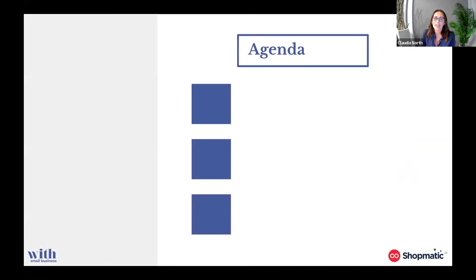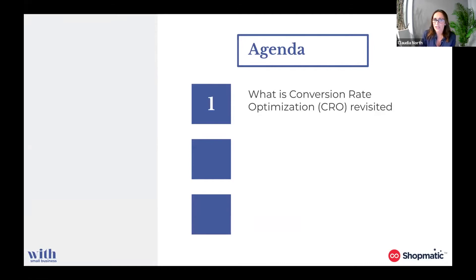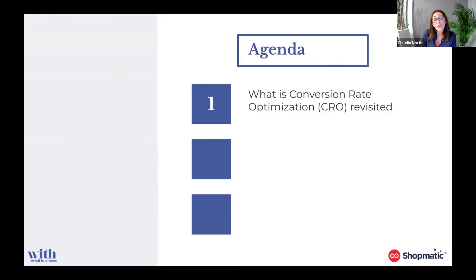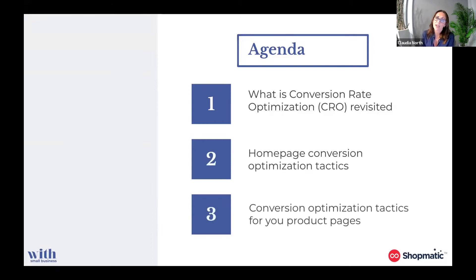Just to touch on what we're going to be covering today: first, what is conversion rate optimization — we'll revisit a summary. Next, we'll tackle some conversion rate tactics for your home page, which is such an important place where all visitors come, and we want to use it as a functional tool to convert people — thinking about the philosophy, the behaviours, and how we take people through the customer journey. Finally, we're going to look at some conversion rate tactics for your product pages as well, so once we get visitors moving on from the home page, how do we get them to convert on our product page?